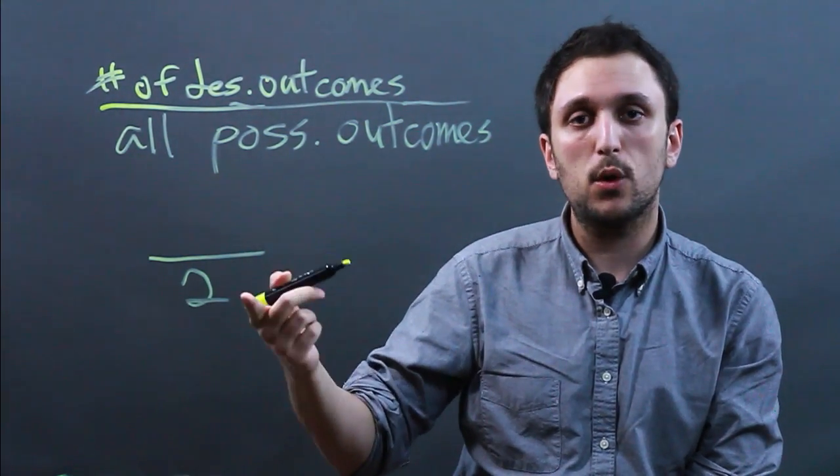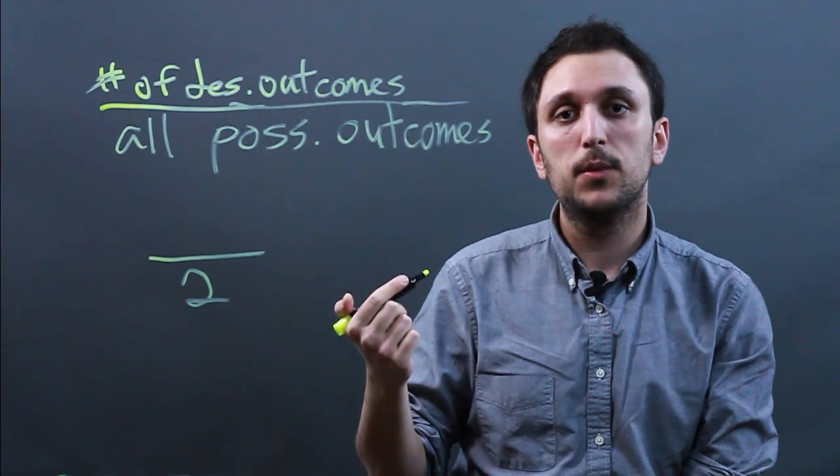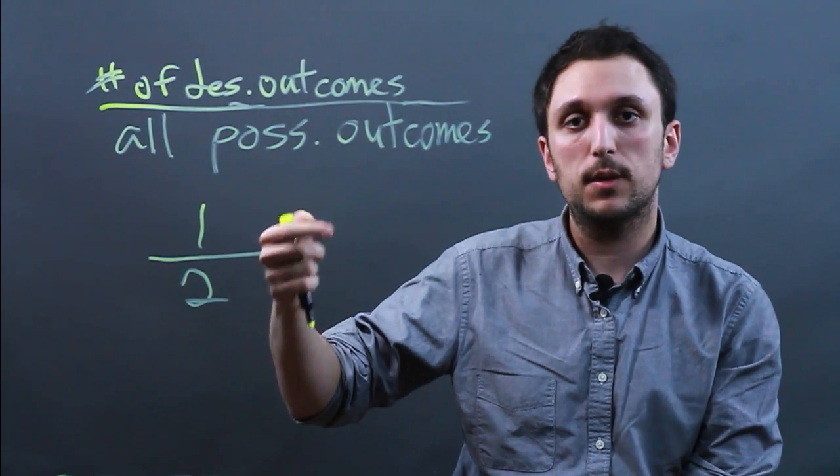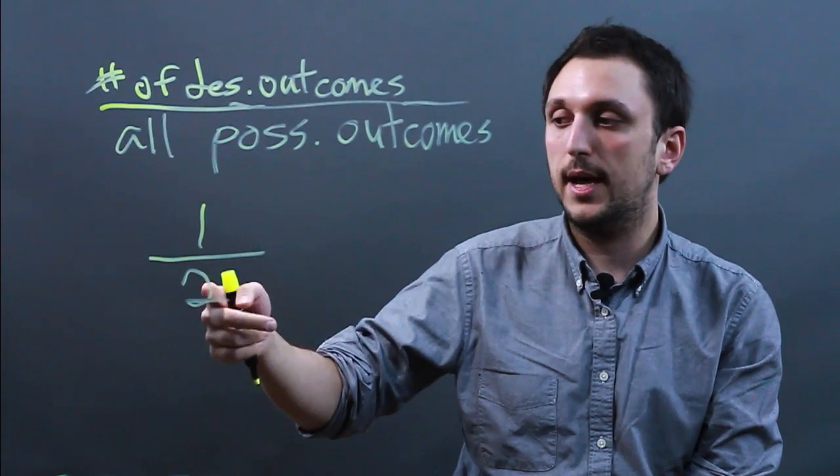Now, let's say we flip the coin and we want to land tails. Well, that is one chance out of two, so it's one half. The probability of flipping a coin and getting tails is one half.